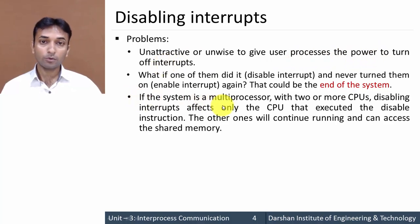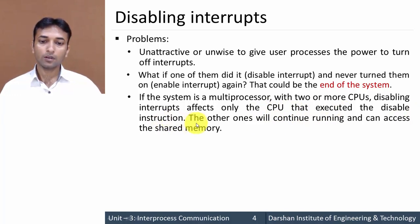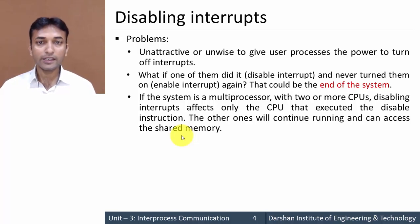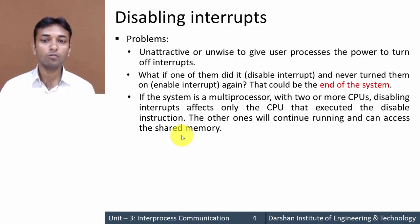The second problem: if the system is a multiprocessor, meaning it has two or more CPUs, disabling the interrupt will affect only the one CPU that executes the disable interrupt instruction. The other CPUs will continue running and can still access the shared memory or shared resource. So this mechanism will not work in a multiprocessor computer — it only works on a single-processor computer. These are the problems of disabling interrupt.